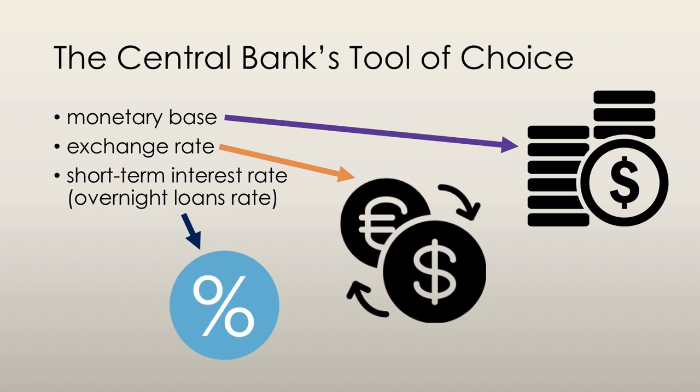The overnight loans rate is the interest rate on overnight loans that banks make to each other. At the end of the day, when all transactions have been made, banks need to actually transfer money into each other's reserve accounts according to how much their customers have spent. If I buy something from Metro, my local grocery store, using my debit card, my bank must transfer money into Metro's bank account.